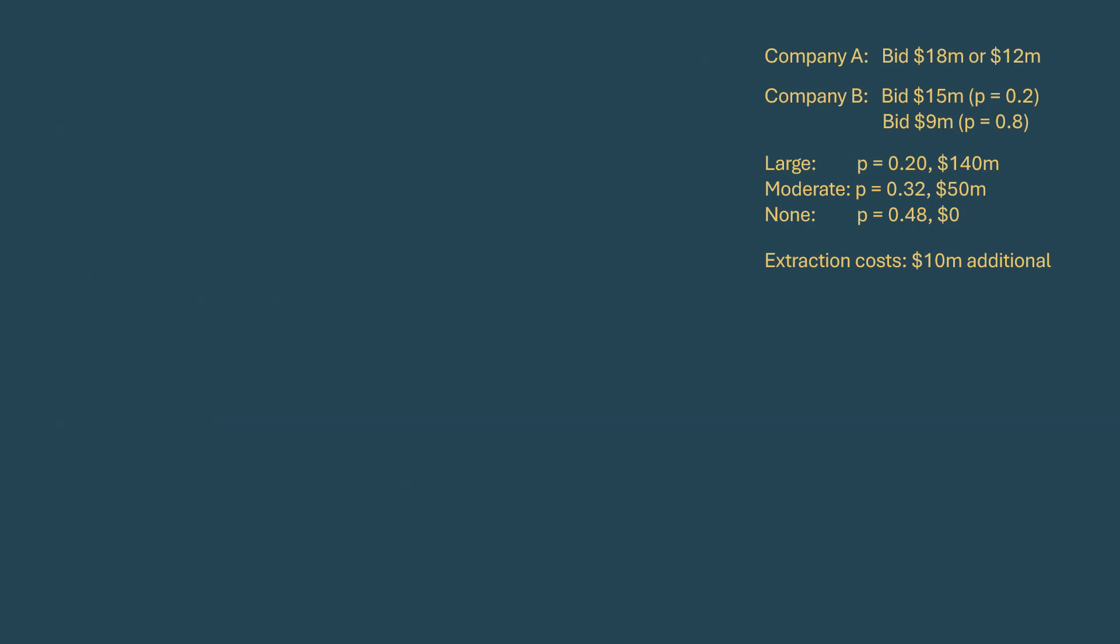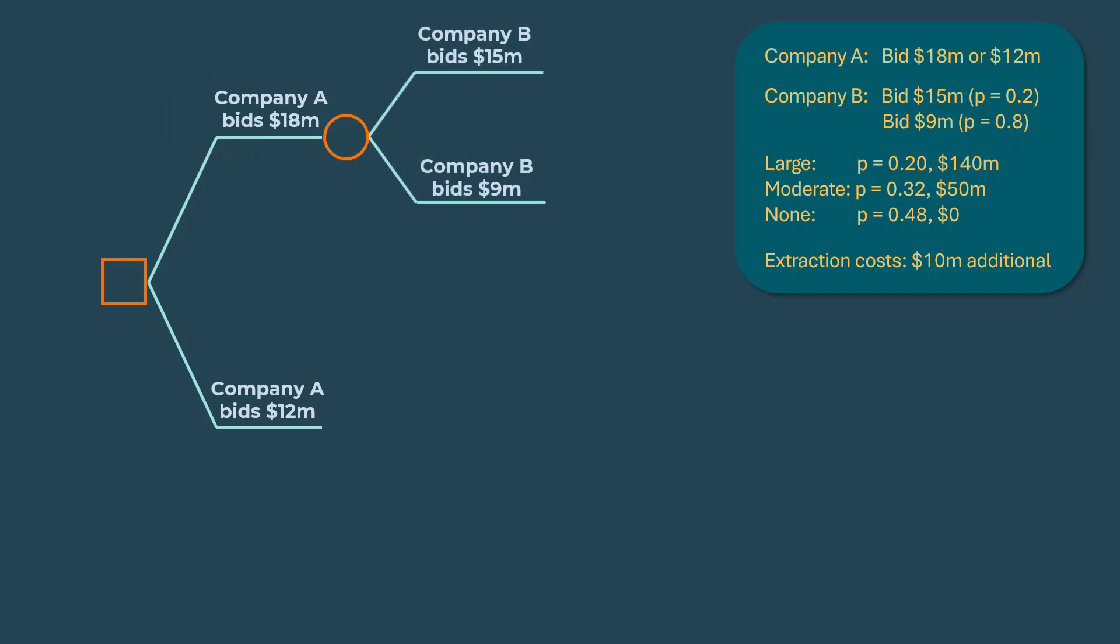I'm going to begin with the decision node with branches for Company A's options. They can either bid $18 million or $12 million. If they bid $18 million, Company A will win the bid since Company B bids below $18 million. We could introduce a chance node here for Company B bidding $15 million or $9 million, but the result will be the same since Company A will win the bid either way. So we skip that and move on to the three states of nature that Company A will face if they win.